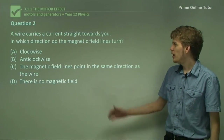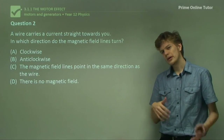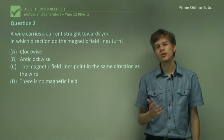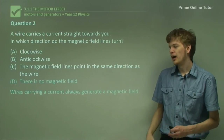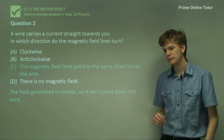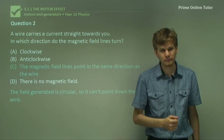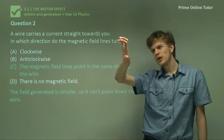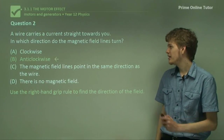Question 2: A wire carries a current straight towards you. In which direction do the magnetic field lines turn? First of all, a current-carrying conductor in a straight line produces a circular magnetic field, so it can't be pointing in a single direction. To determine whether it's clockwise or anti-clockwise, we use the right-hand grip rule — our thumb is going to be the direction of the current going straight towards you. Looking at the direction of the fingers, we can see that it is indeed anti-clockwise.